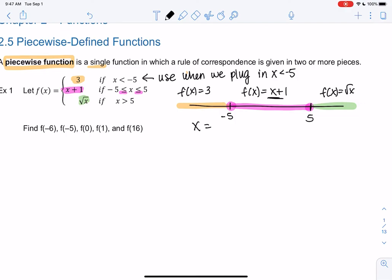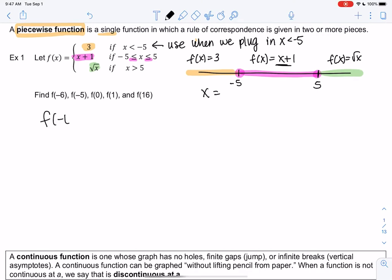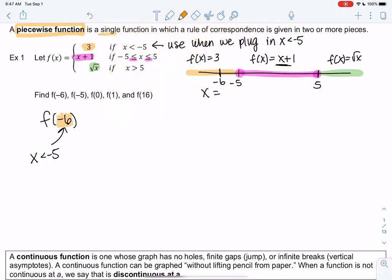So it's like a three-piece function. It's not going to make a nice curve or a nice straight line. It's going to have three different pieces. Let's actually figure this out. So let's find some function values. f of negative 6, so negative 6 would be in the orange category, because it's less than negative 5. So we're going to plug into 3, which is 3 regardless of x.